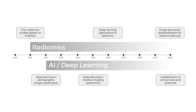At the same time we've also witnessed the resurrection of AI research — deep learning specifically. Deep learning mainly involves the use of neural networks, structures that are loosely based on the human brain, in order to learn representative features from data automatically. This has led to many breakthroughs, and deep learning started making its way into medical imaging around 2015, as well as into radiomics research specifically.